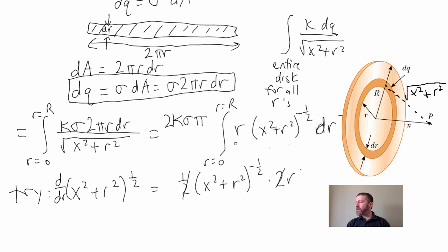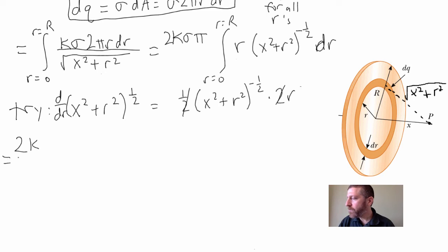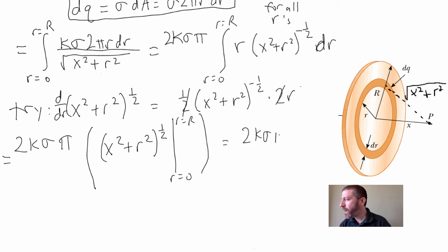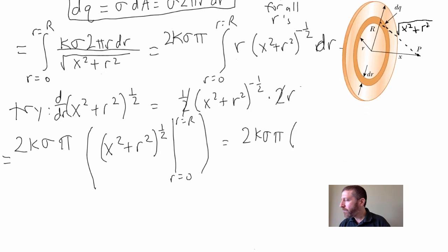And now all I got to do is evaluate it. So I get 2K sigma pi. And what I found is my integral is X squared plus R squared to the one half. And I got to evaluate it from R equals zero to R equals R. And when I do that, I get 2K sigma pi times final will be X squared plus big R squared to the one half. And then minus X squared because this R will be zero, so just minus X squared to the one half.